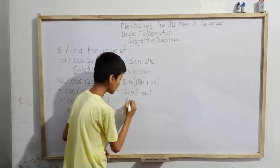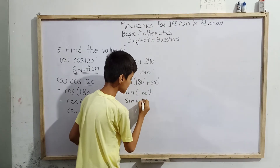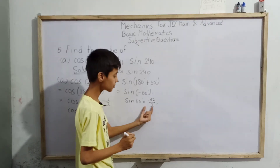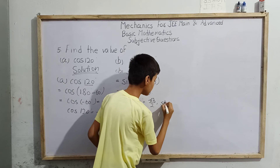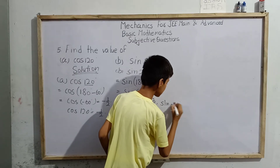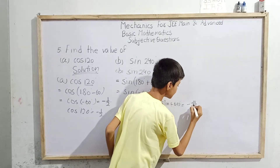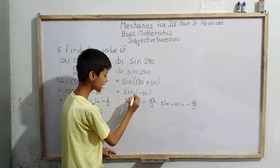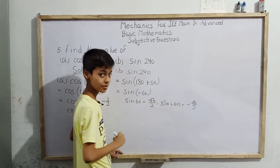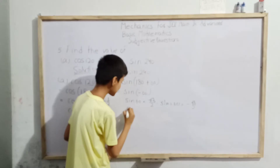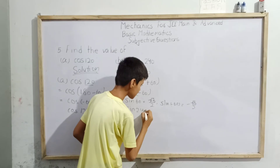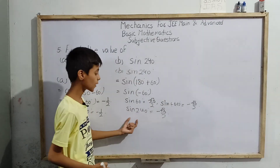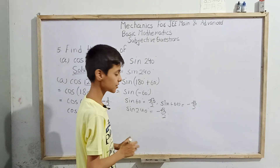We know sin 60° = √3/2. So sin(240°) = −sin 60° = −√3/2. Therefore, sin 240° = −√3/2. That is the answer for part (b).